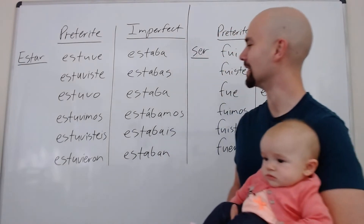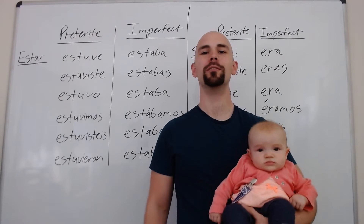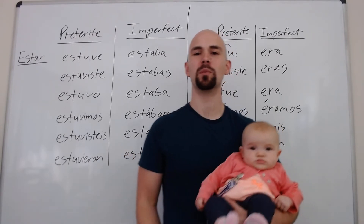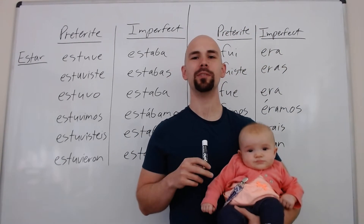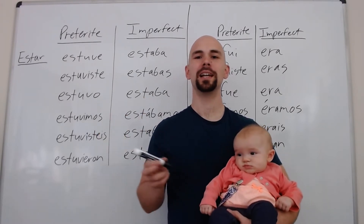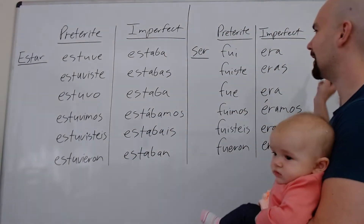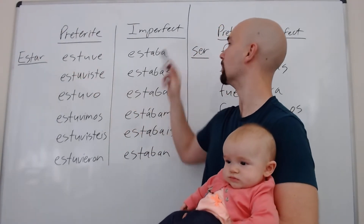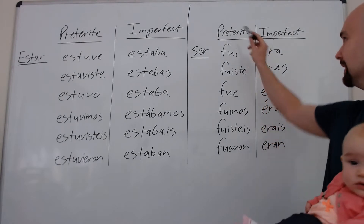This is actually going to be a really short lesson. We are going over chapter 2 of Advanced Spanish Step by Step — just the first portion of it. Most of the concepts are review, but we're going to be focusing heavily on the being verbs: ESTAR and SER. On this board I currently have all the forms of ESTAR in the preterite and the imperfect, and all the forms of SER in the preterite and the imperfect.